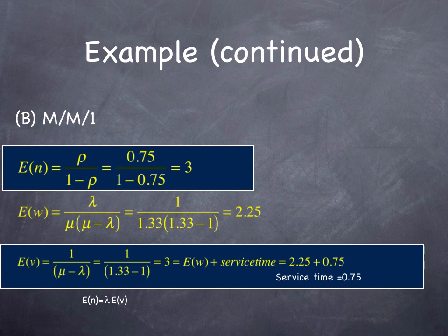The number of people waiting at the Krusty Burger, or vehicles in the queue, if you want to relabel the problem, would be 3, and that's more than we had before. The expected wait time, lambda over mu times mu minus lambda is 2.25.